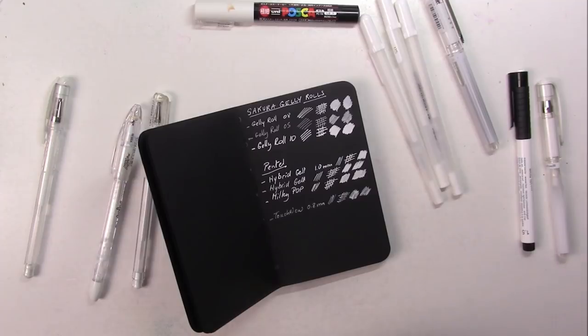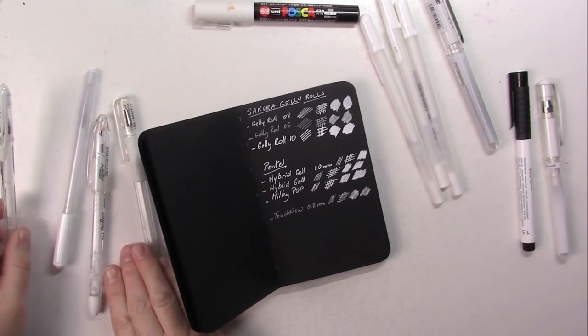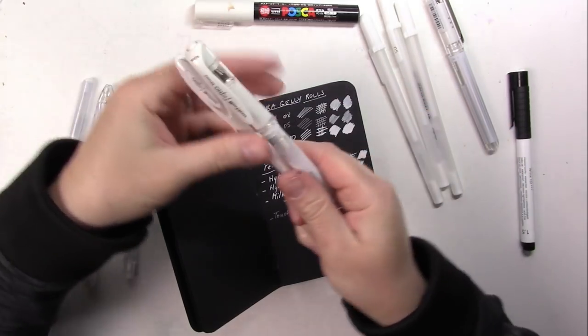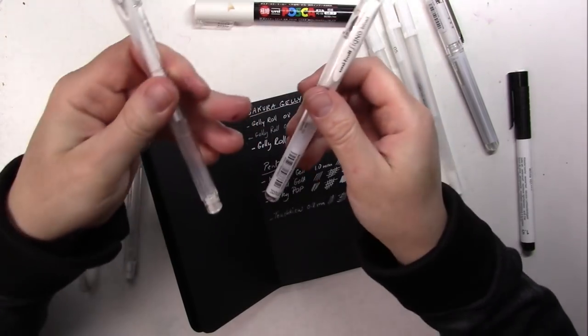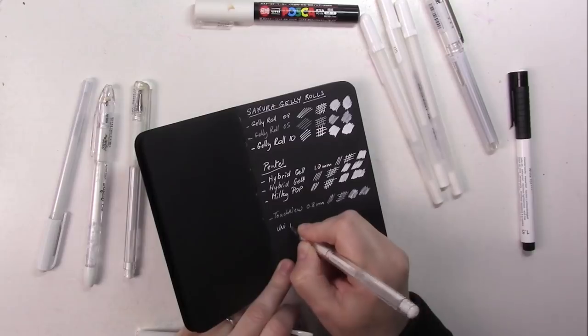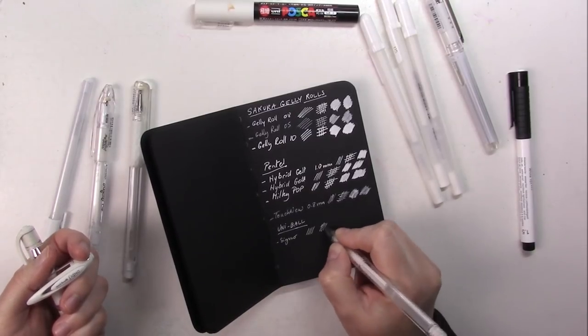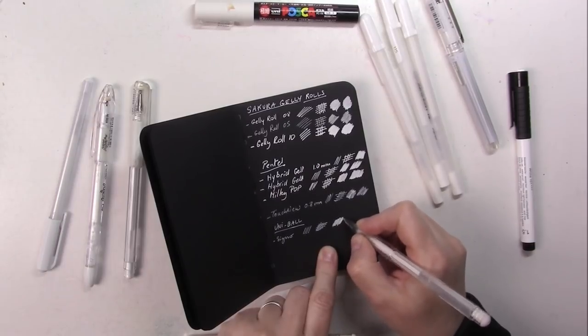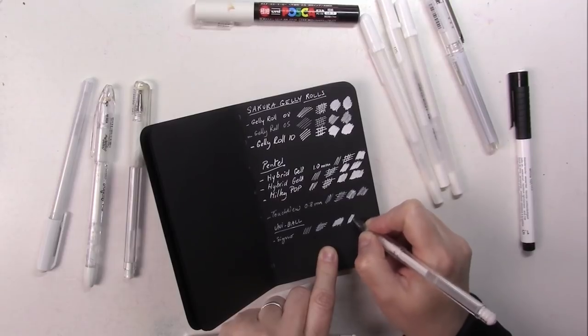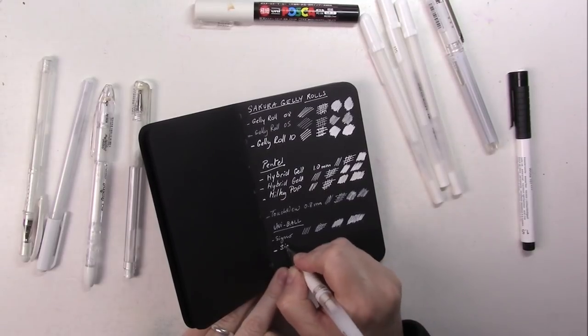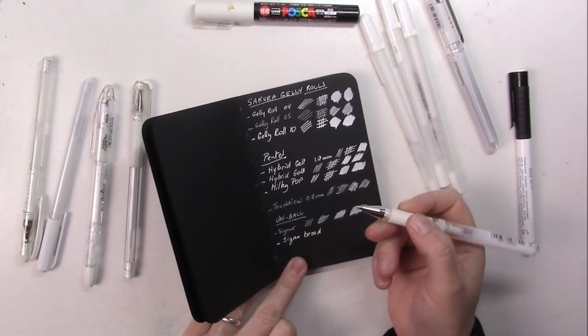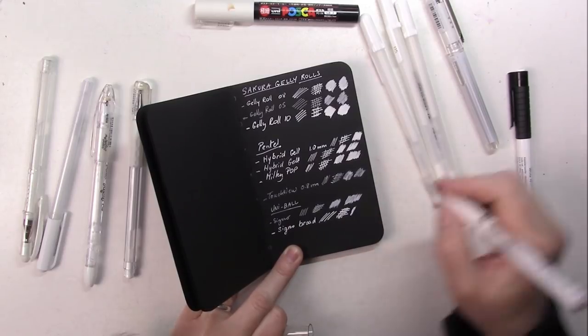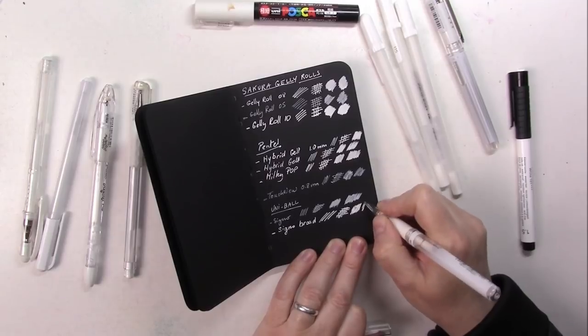Finally I've got the Signo, the Uniball Signo. I've got these two, a regular one and a broad one. This one writes really well but again, because it's a finer tip, there's not as much ink coming out. Bear in mind that I haven't used some of them for quite a while so they're a little dry as I just get started with them. This is a bit scratchy.